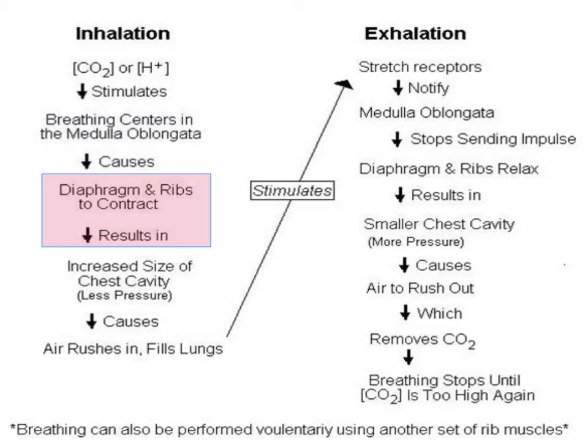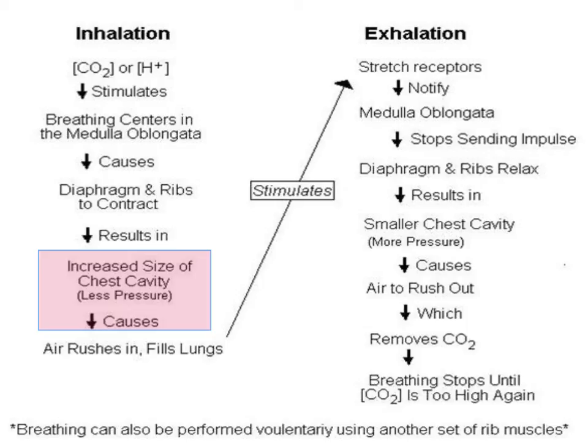Inhalation is achieved by the contraction of the intercostal muscles of the ribcage, which act to pull the ribcage upward and outward, hence increasing the volume of the thoracic cavity. The diaphragm also contracts to extend the cavity further downward. The volume of the thoracic cavity increases, creating an area of low air pressure inside the lungs, and air is drawn into the lungs.